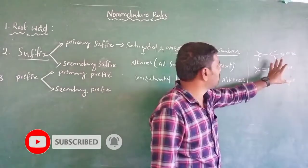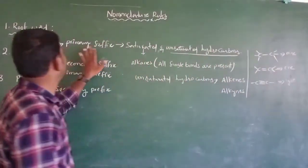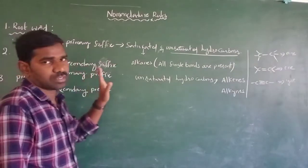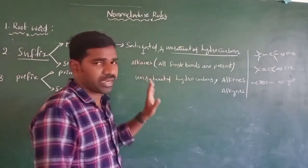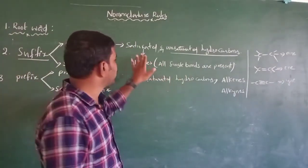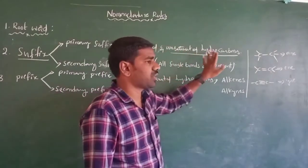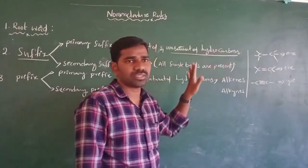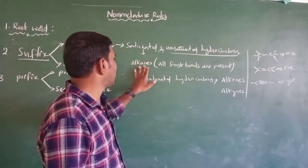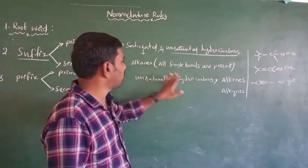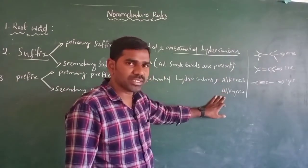So primary suffix — all kinds are used for alkanes, alkenes, and alkynes.